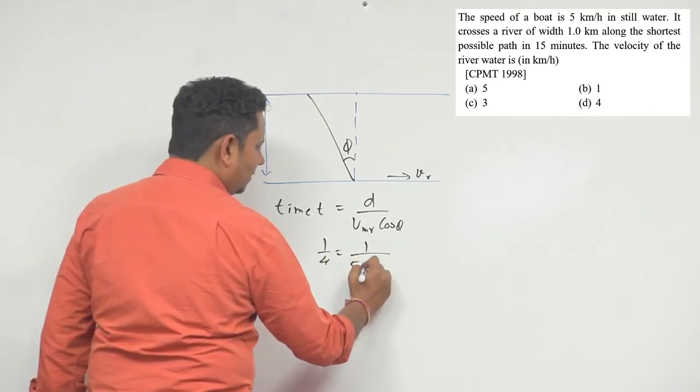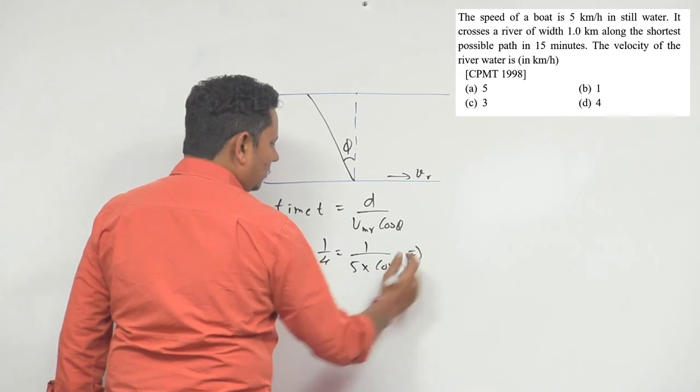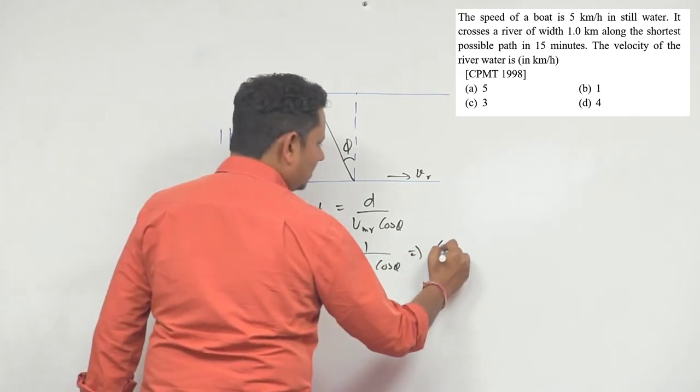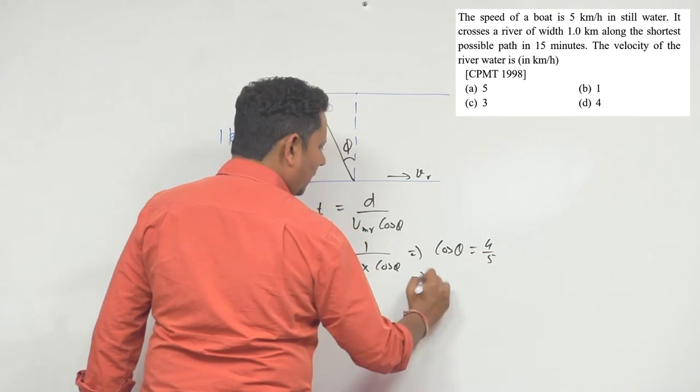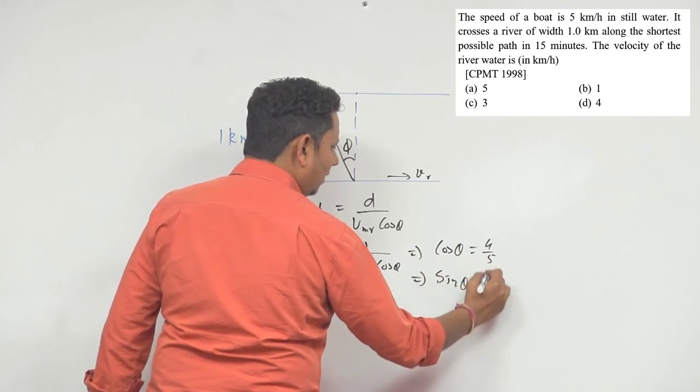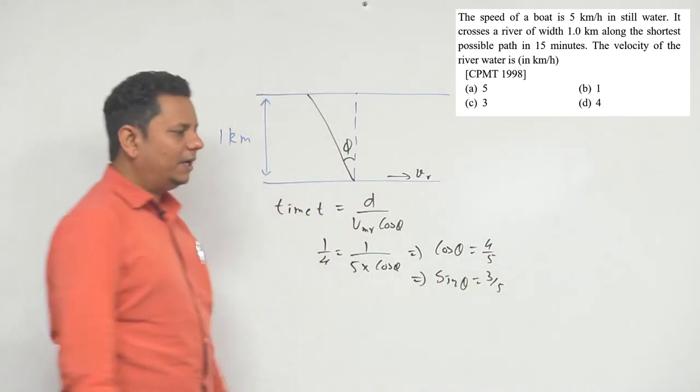So cos phi will be equal to 4 by 5, which implies sin phi will be equal to 3 by 5.